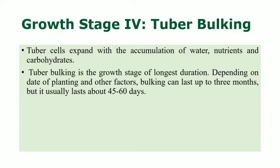The fourth growth stage is tuber bulking, where the tuber expands with the accumulation of water, nutrients, and carbohydrates. Tuber bulking is the growth stage of longest duration. Depending on the date of planting and other factors, bulking can last up to three months, but it usually lasts about 45 to 60 days.